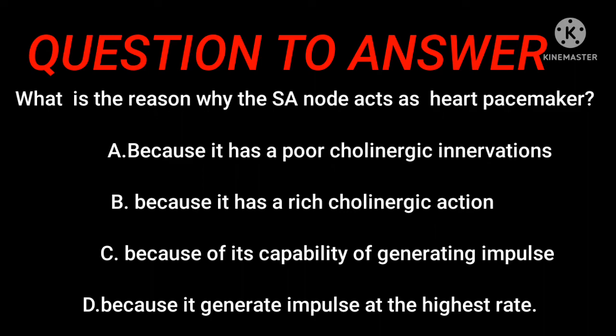Question number 20: What is the reason why the SA node acts as the heart's pacemaker? A. Because it has poor cholinergic innervation. B. Because it has rich cholinergic action. C. Because of its capability of generating impulses. D. Because it generates impulses at the highest rate.